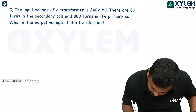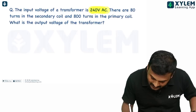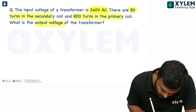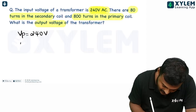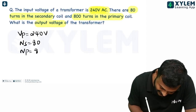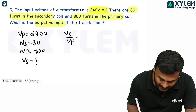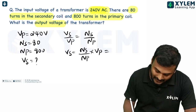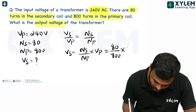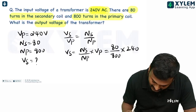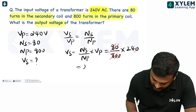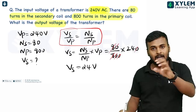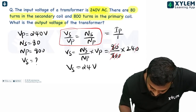The input voltage of a transformer: using the formula vs/vp = ns/np, so vs = (ns/np) × vp. So vs = (10/100) × 260, cancel it — we get 24 volts. So vs equals 24 volts. The relationship IP/IS is also related to the number of turns.